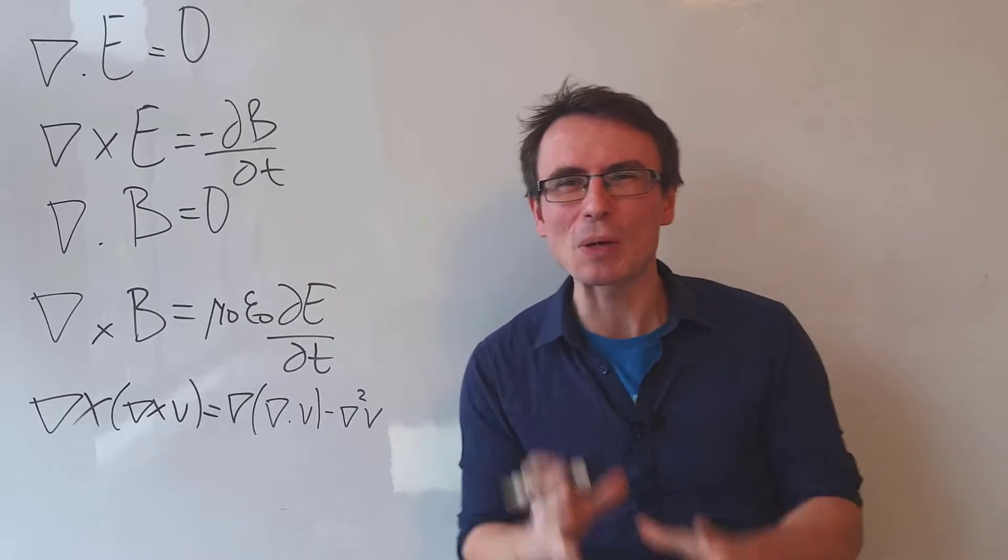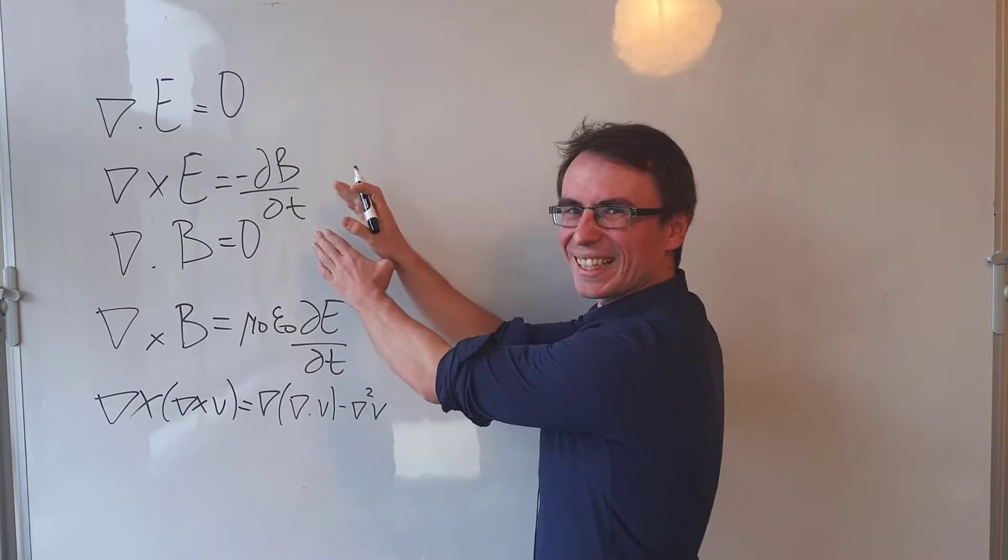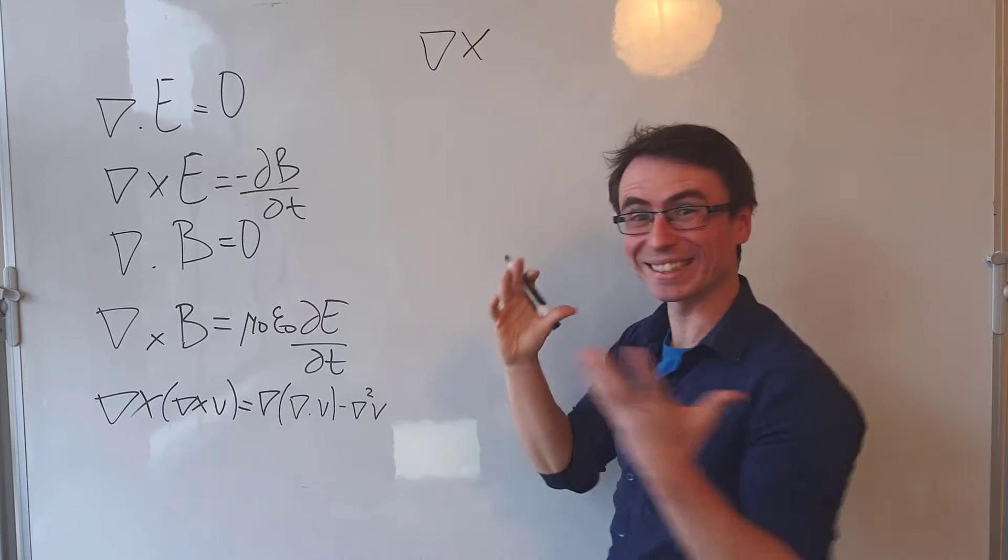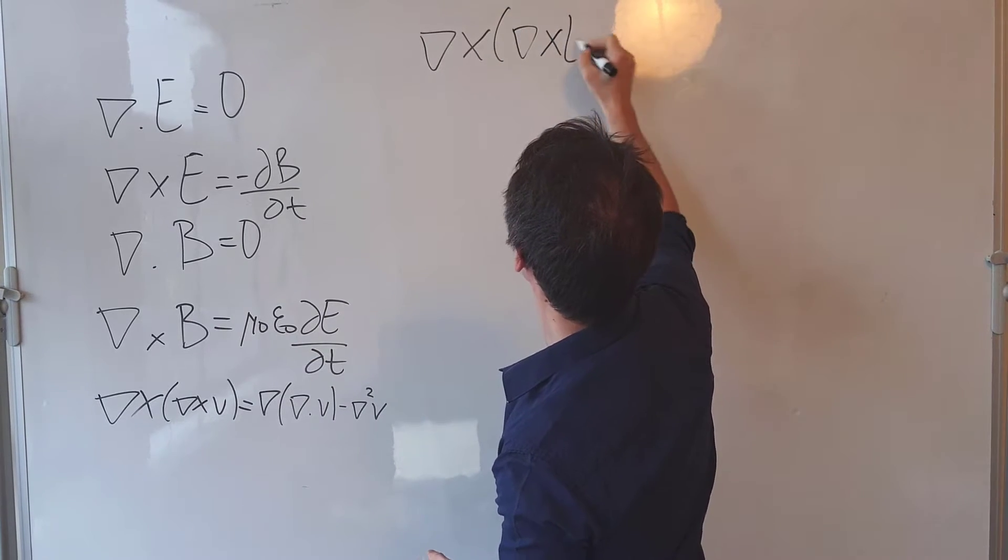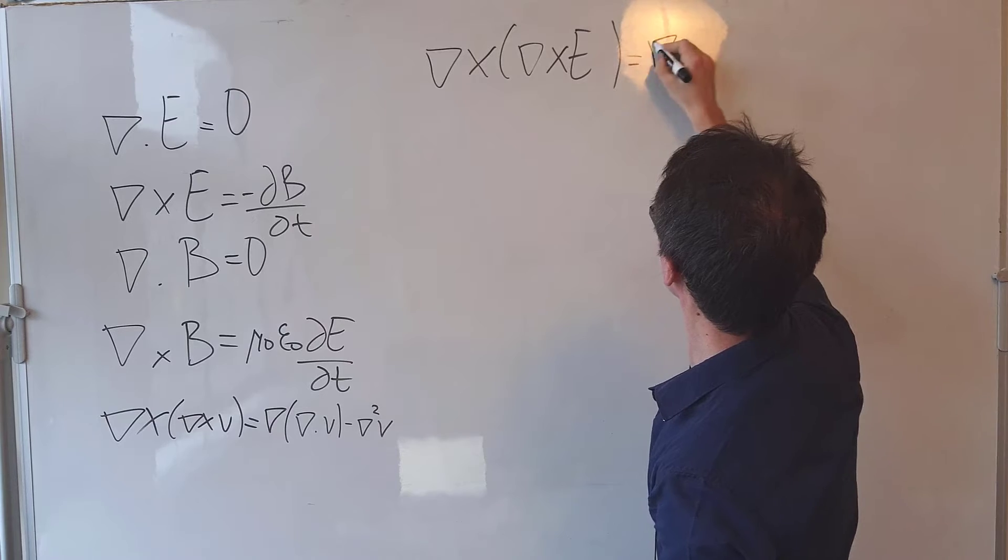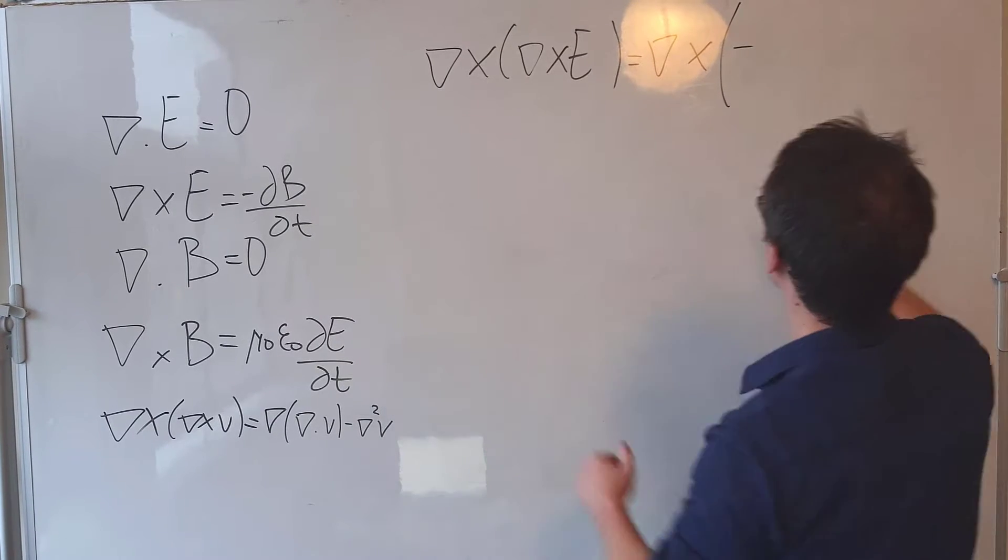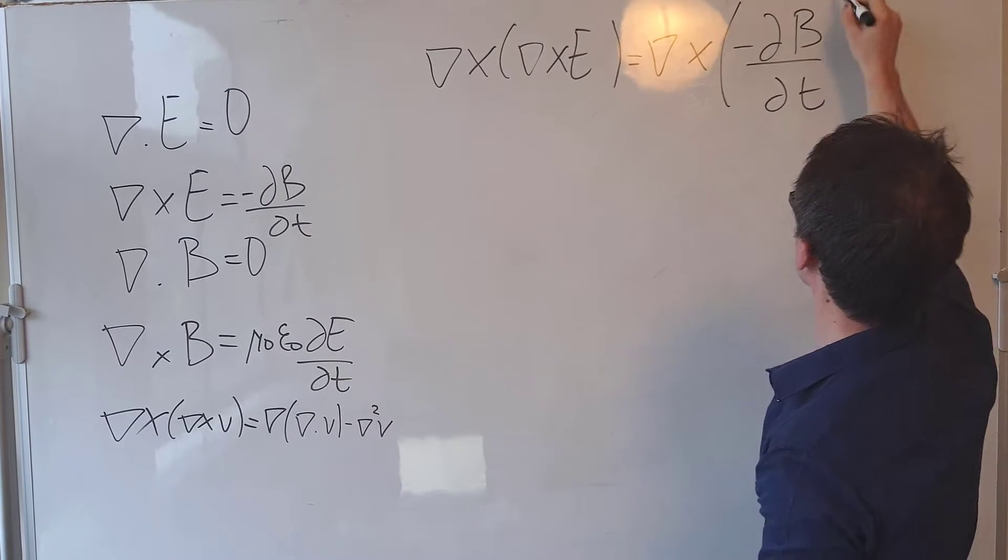James Clark Maxwell noticed something spectacular about these equations. Let's take the second equation and I'm going to take the curl of the curl of E. Well, this will then have to equal the curl of negative the partial derivative of the magnetic field.